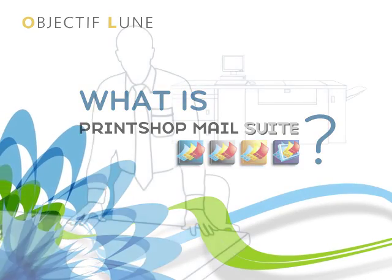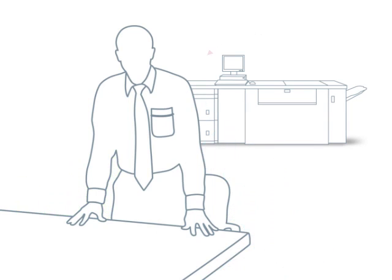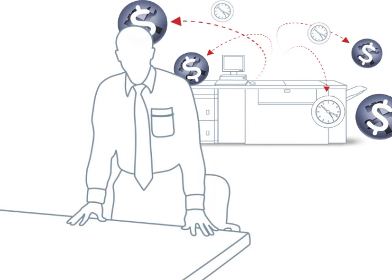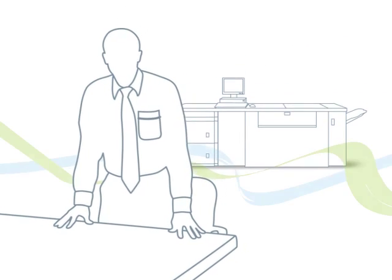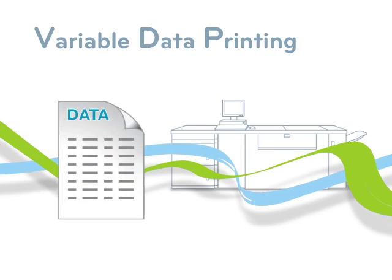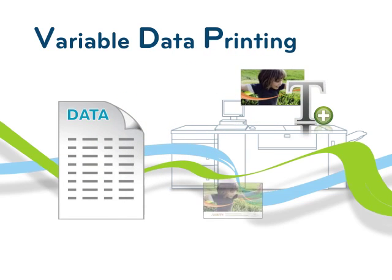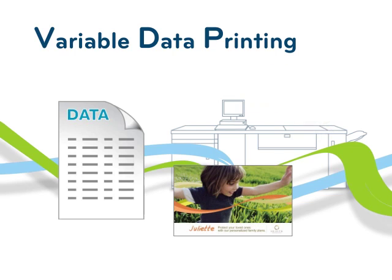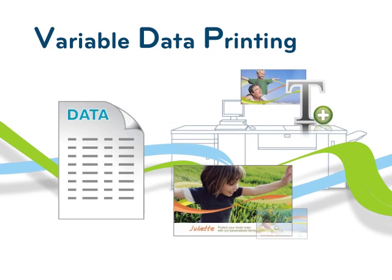Are you offering VDP as a service? If not, chances are you are losing business opportunities as we speak. But what exactly is VDP? VDP stands for Variable Data Printing. It is a printing process in which elements such as images and text change from one printed piece to the next using information from a database.